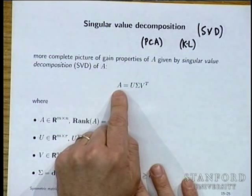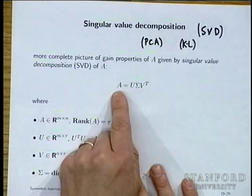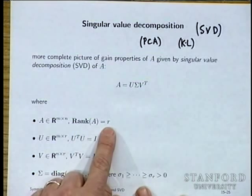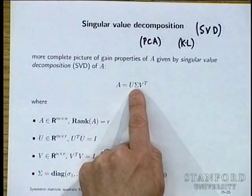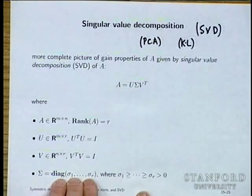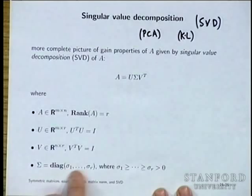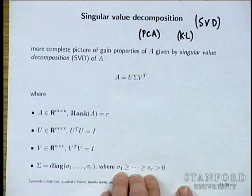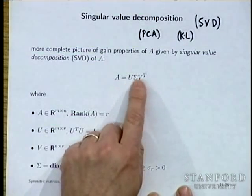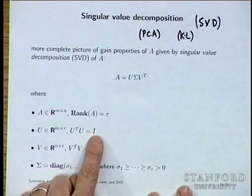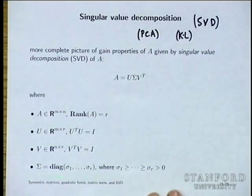Any matrix can be written as A = U Σ V^T, where A is M by N with rank R. The intermediate matrix Σ is diagonal with size R by R, and the singular values σ₁ through σ_R are ordered from largest to smallest — all positive. U and V are both matrices with orthonormal columns, so U^T U = I and V^T V = I.